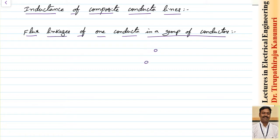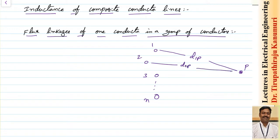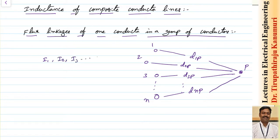Let us assume there are a group of conductors — conductor one, two, three, and so on up to N conductors. In order to calculate the flux linkages, instead of taking flux that extends up to infinity, let us take some point P which is very far with respect to the strands of this conductor. The distance of strand number one with respect to point P is D1P, strand two is D2P, strand three is D3P, and for the nth conductor the distance is DnP. The currents passing through them are I1, I2, I3, up to In.